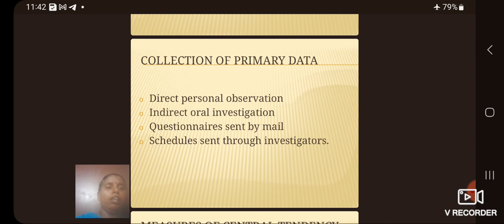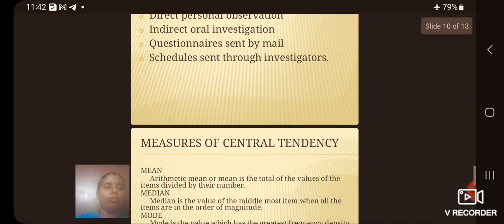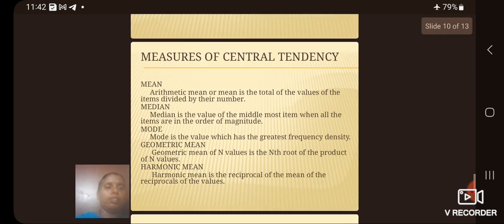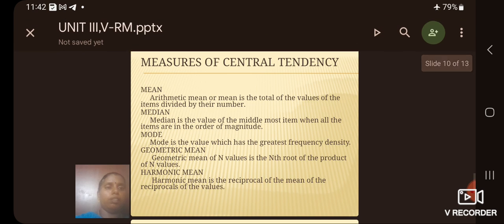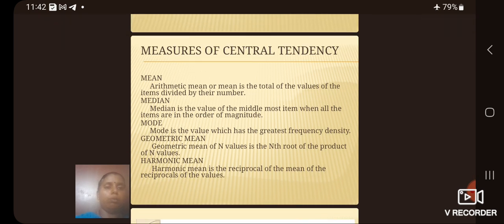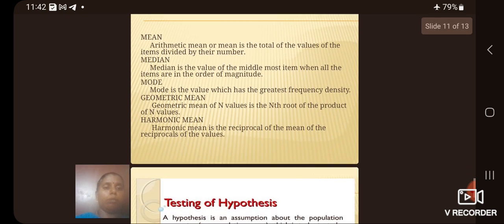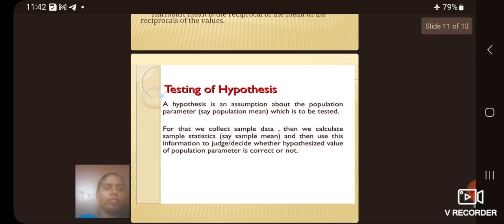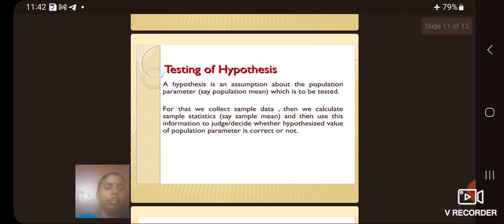Then we see the common measures of central tendency are mean, median, mode, geometric mean and harmonic mean. Then the testing of hypothesis. A hypothesis is an assumption about the population parameter which is to be tested. We collect sample data, calculate sample statistics and use this information to decide whether hypothesis value of population parameter is correct or not.